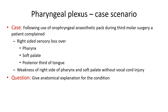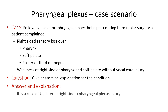You have to answer the following question: give an anatomical explanation for the right-sided sensory loss and weakness of the pharynx and soft palate, and the right-sided sensory loss of the posterior one-third of tongue. What is the answer and explanation for this?